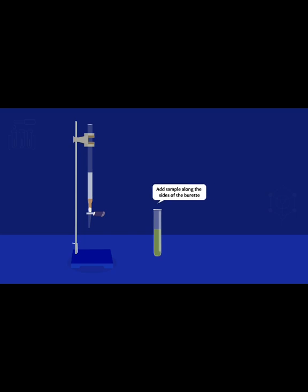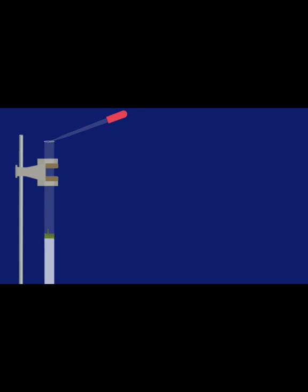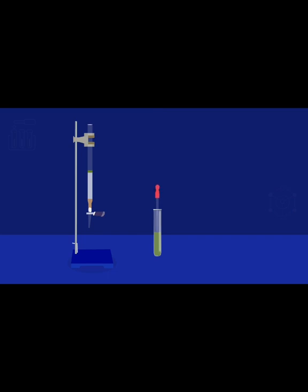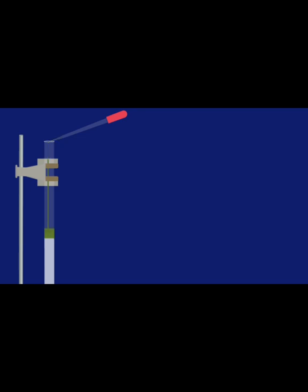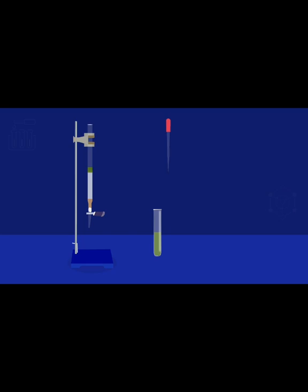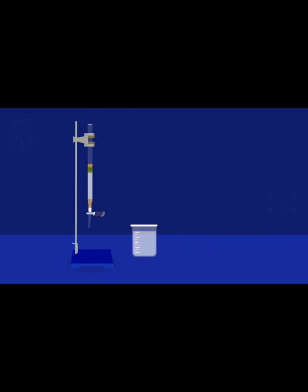Add the sample using a pipette into the column containing the stationary phase. Further add fine sand on top of it, followed by silica gel or alumina gel on top.